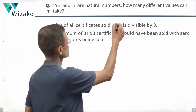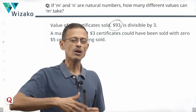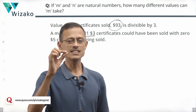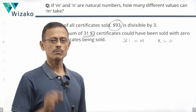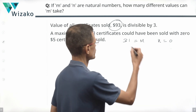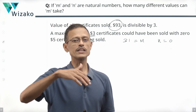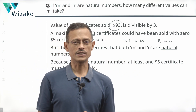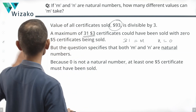Look at the total value — $93. Since 3 divides 93, all certificates sold could have been $3 certificates: 93 ÷ 3 = 31. So M = 31, N = 0. But this is not a valid possibility because N = 0 is not a natural number. The question explicitly states both M and N are natural numbers, so N must be at least 1. We'll use M = 31 as a starting point and reduce M to find valid combinations.